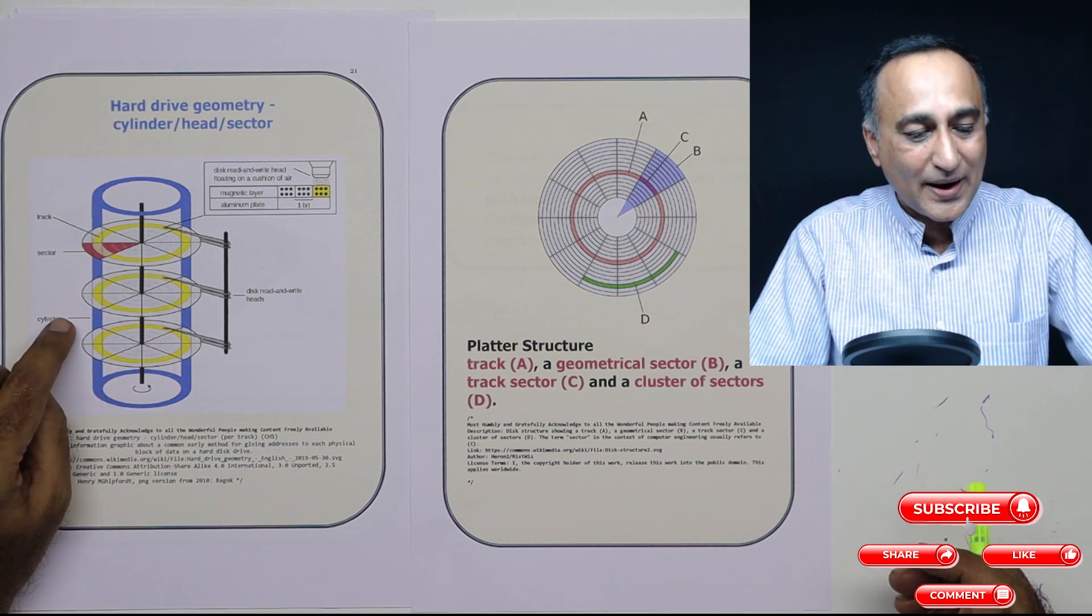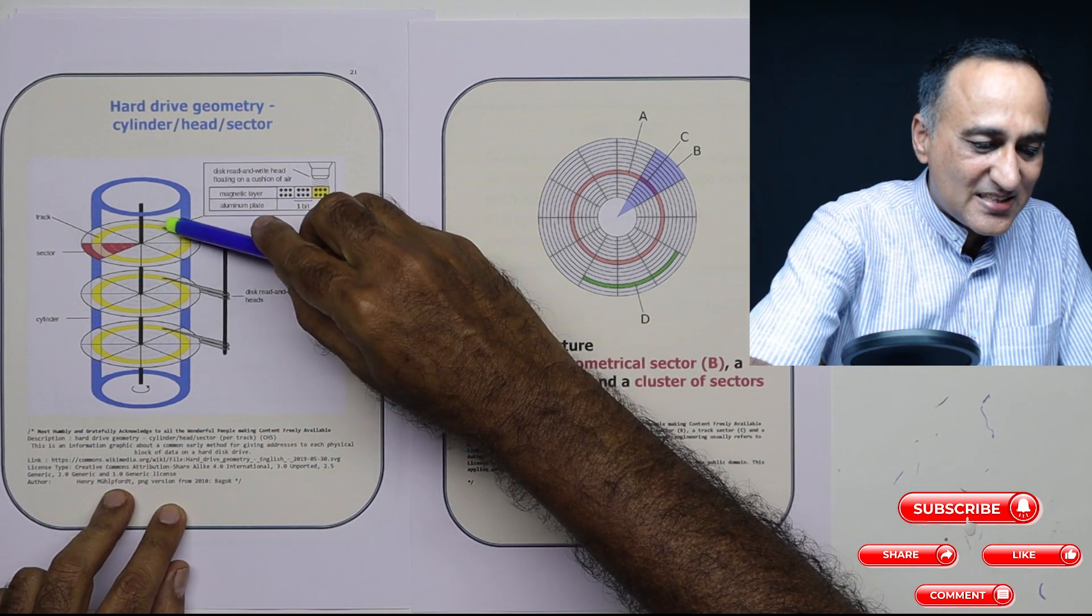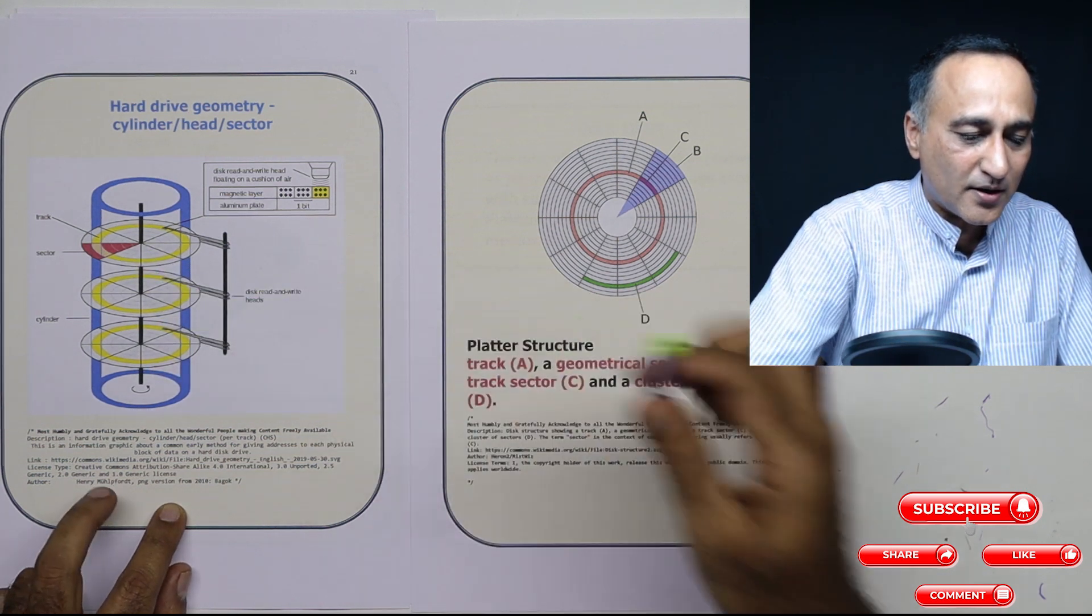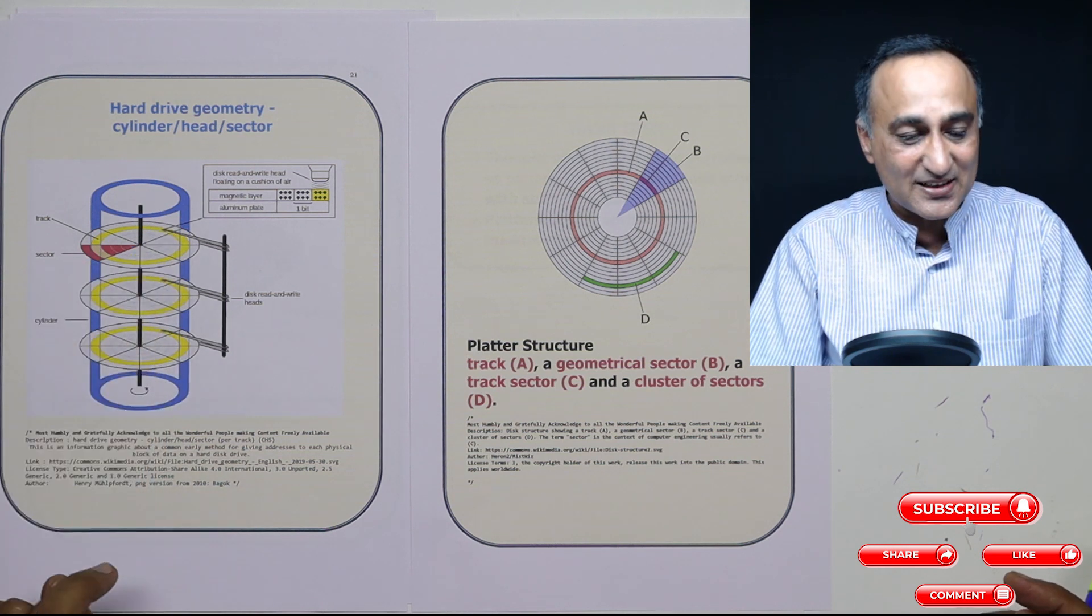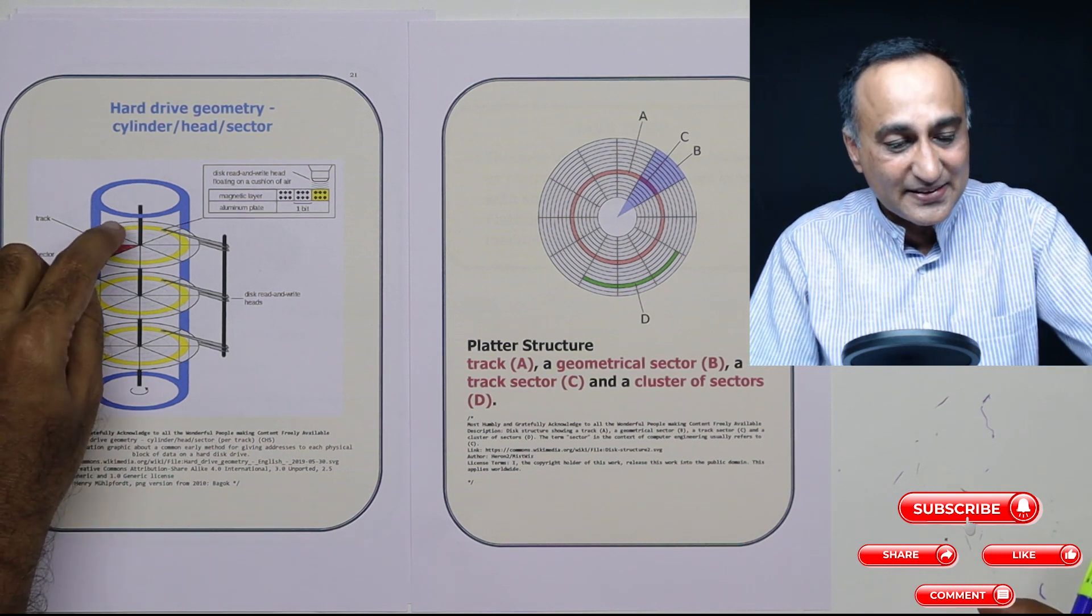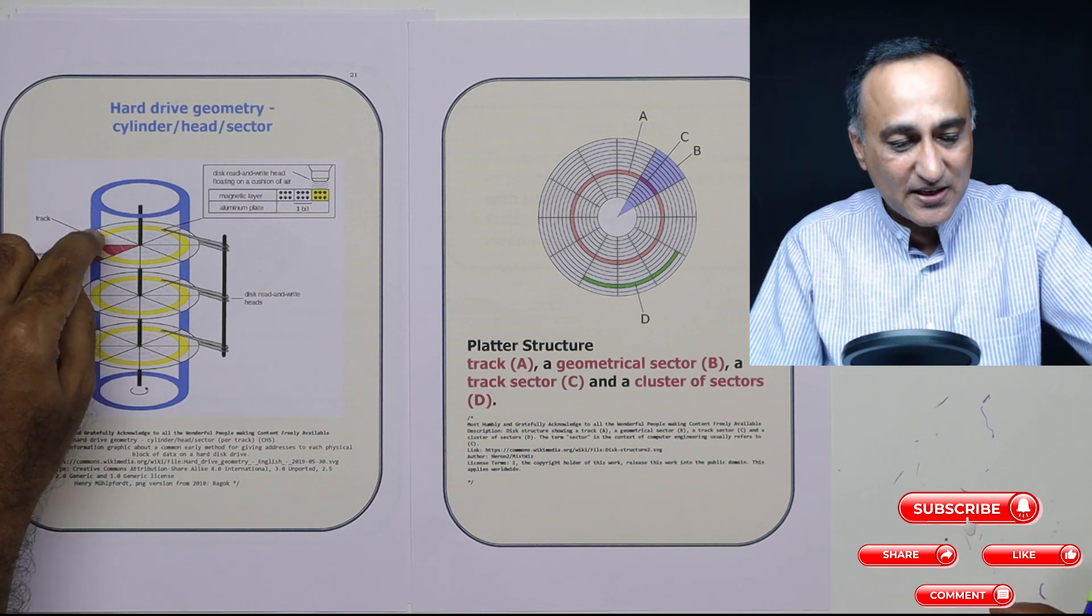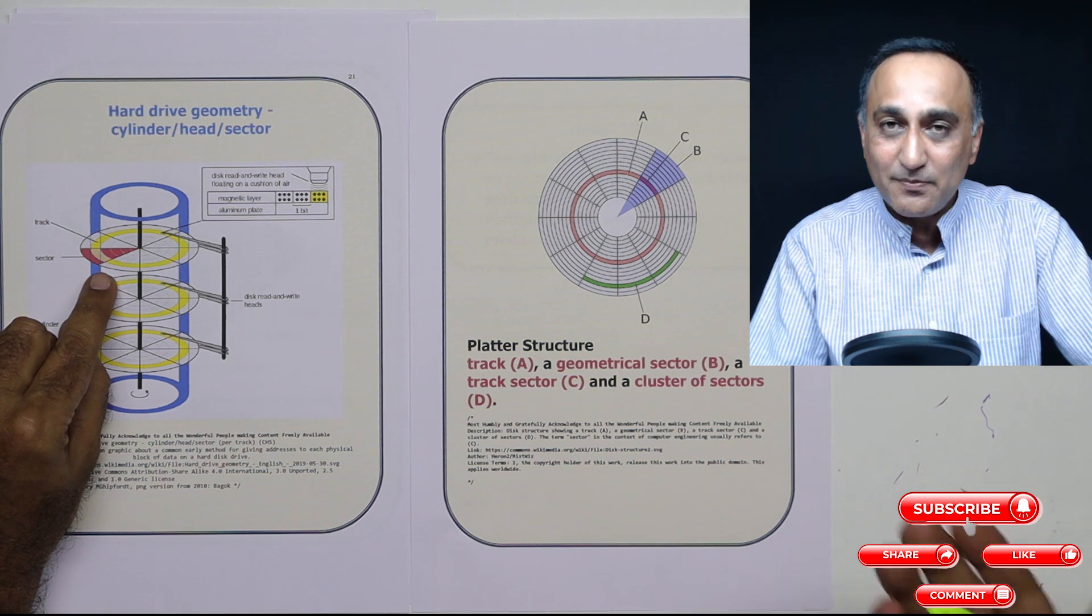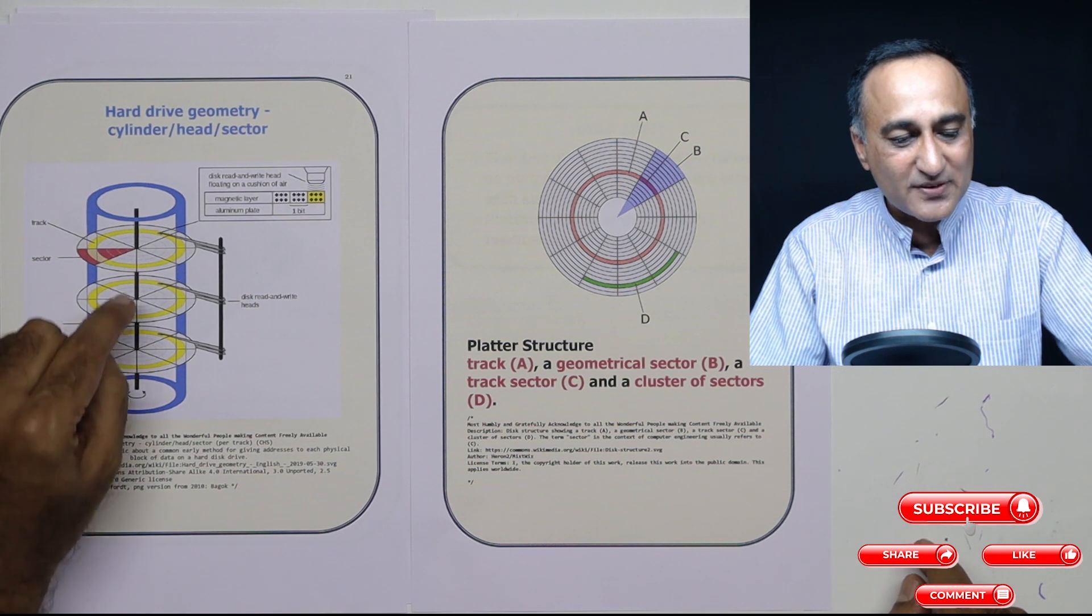So what happens is if you look at this read-write head, this head cannot go here, this head cannot go here, and this head cannot go here. All the heads will be at the same place on all the tracks and sectors. So designers are smart—in order to speed up reading and writing, they try to store it along the same track in each of the platters. That means the information if it is on this platter will be exactly below that in the platter below.